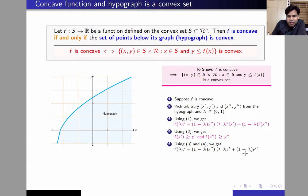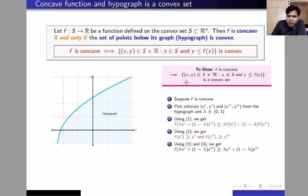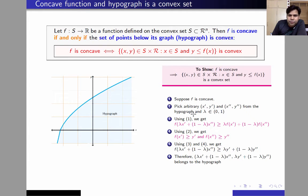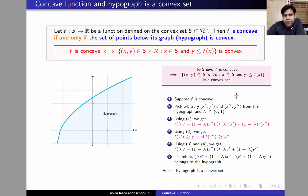This inequality tells us that the point (λx′ + (1−λ)x″, λy′ + (1−λ)y″) belongs to the hypograph, because any point (x, y) satisfying y ≤ f(x) belongs to the hypograph. Therefore, we have shown that the convex combination of (x′, y′) and (x″, y″) belongs to the hypograph, and therefore the hypograph is a convex set. So we have shown that if f is concave, then the hypograph is a convex set.